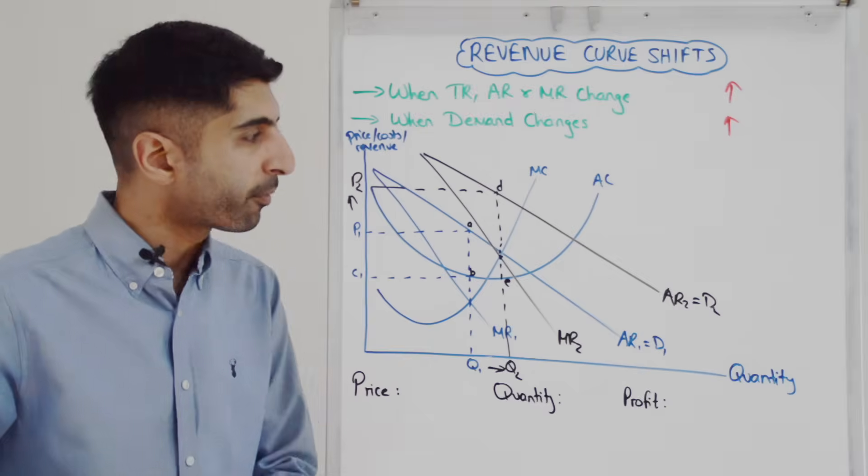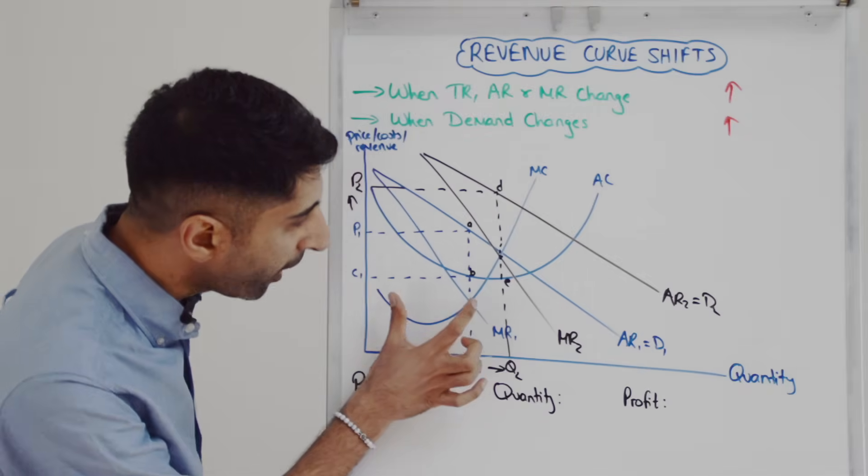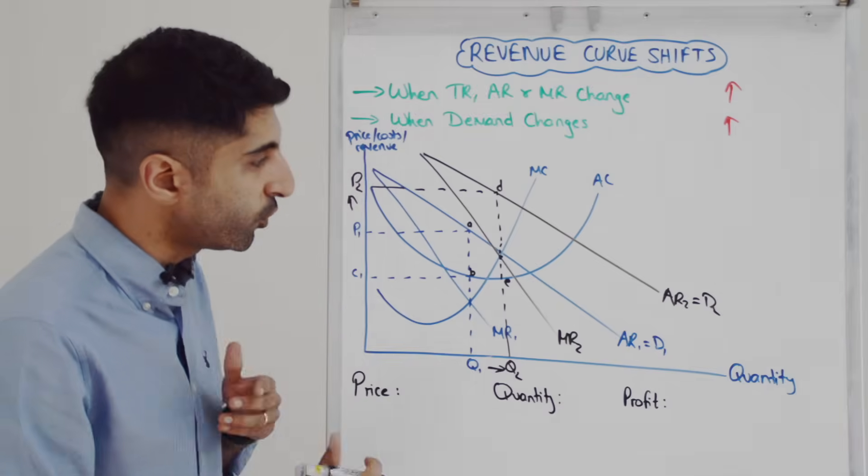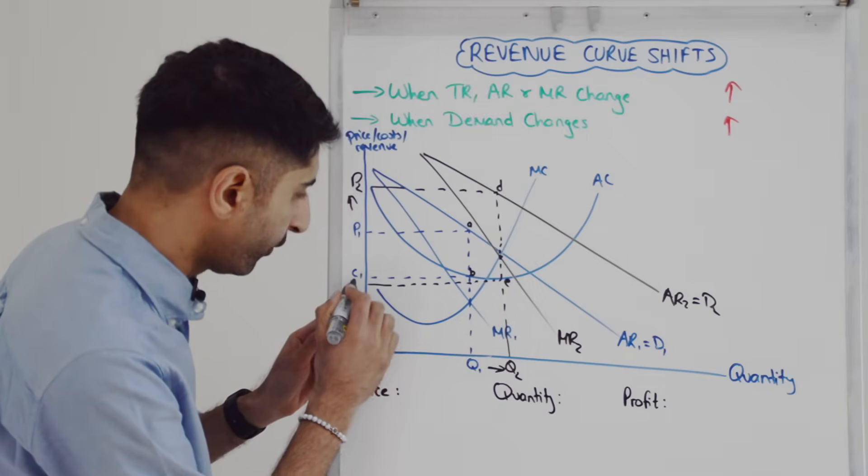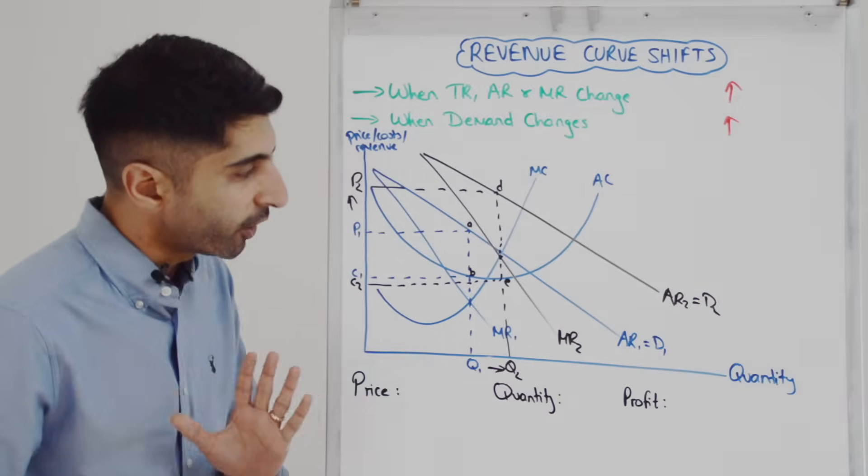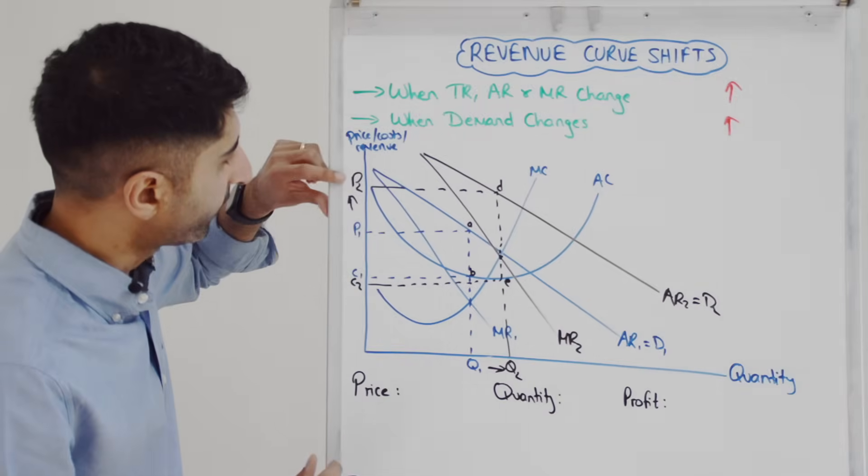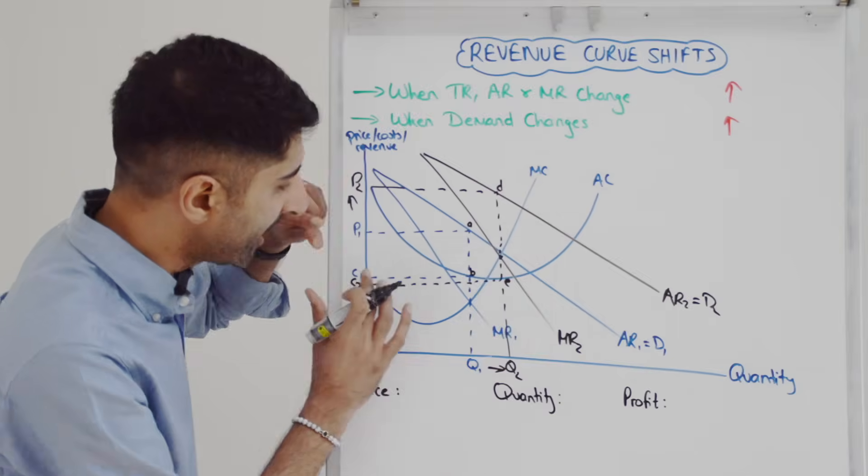AR is significantly greater than AC. This again is supernormal profit per unit. We need to multiply that by all of Q2 to get the total profit. So let's stretch that across, let's call this point C2. So our new supernormal profit box is going to be the box P2DEC2.